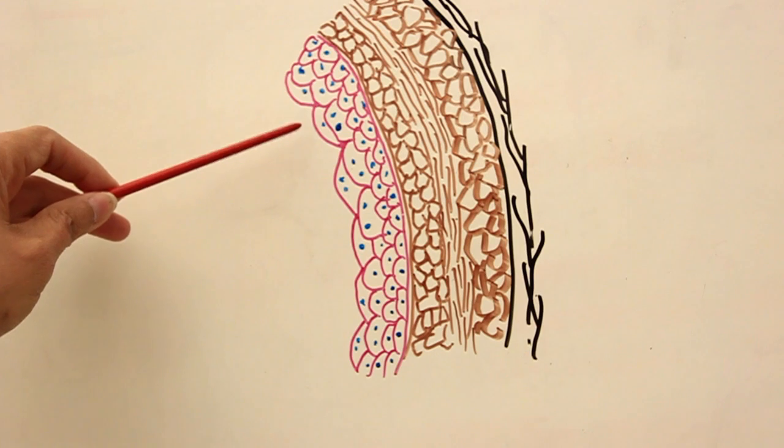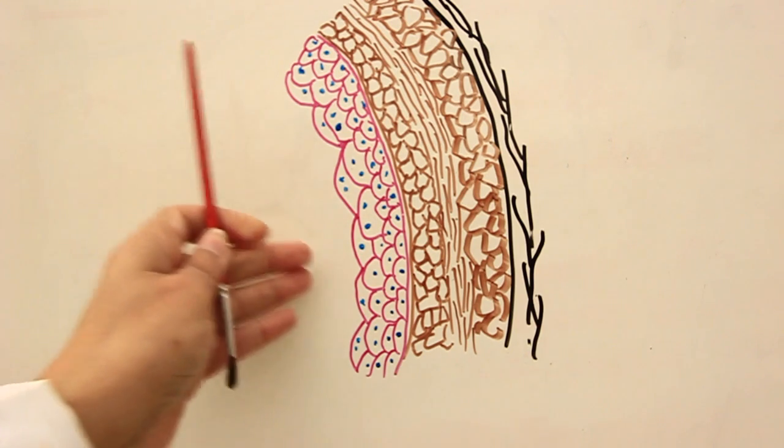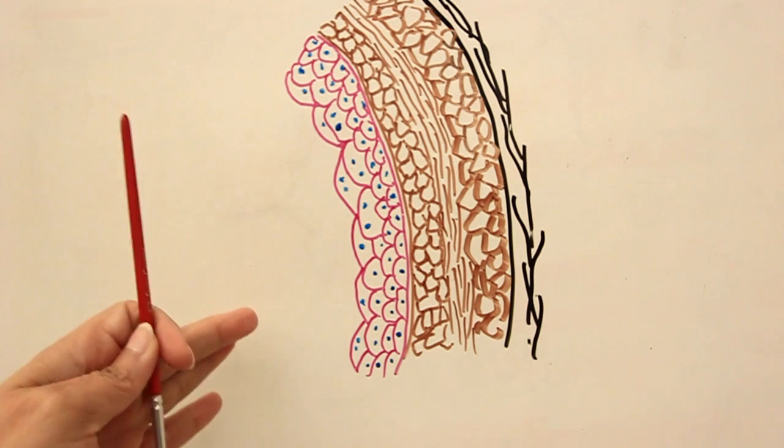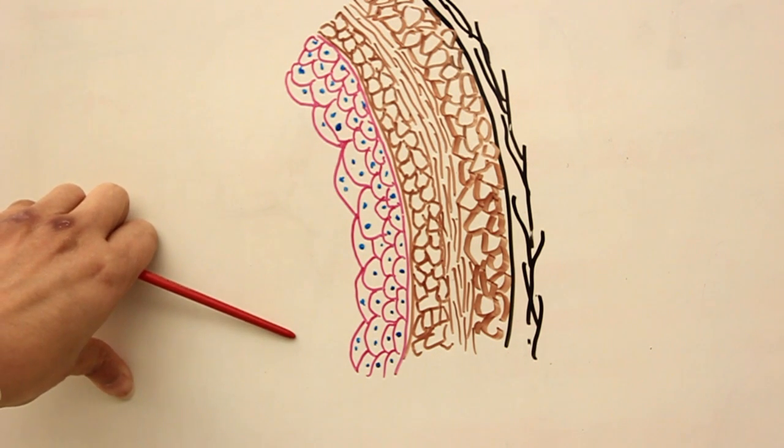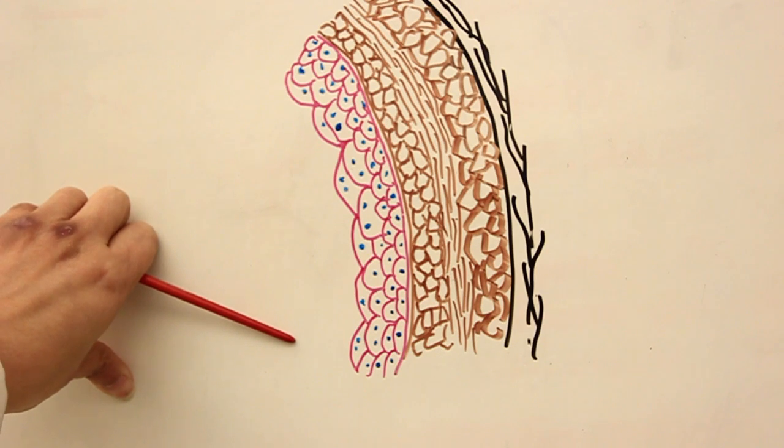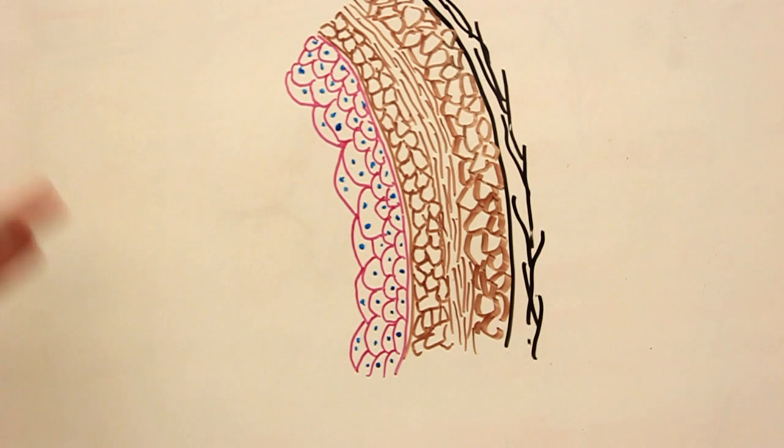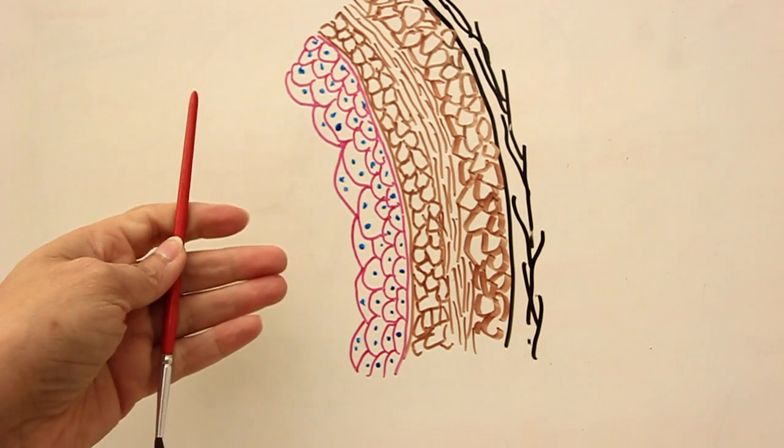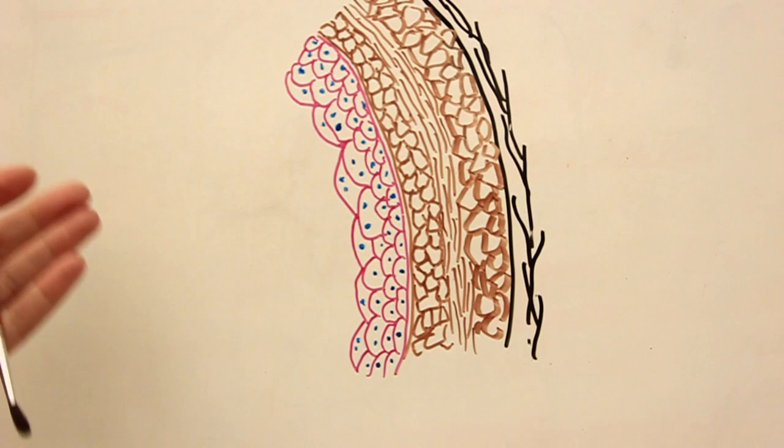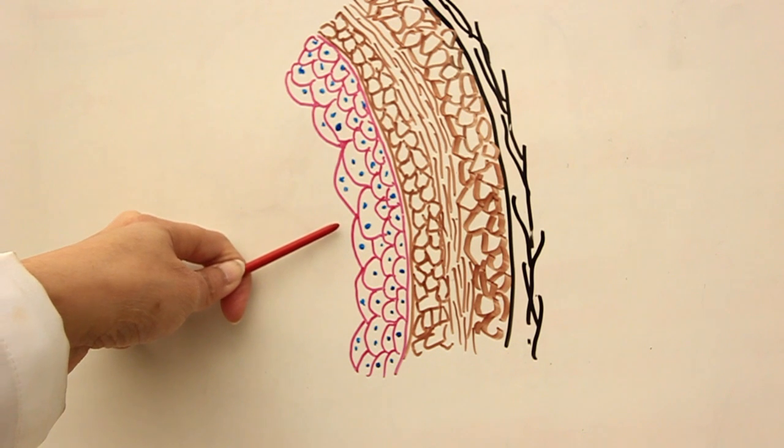It's a modified stratified epithelium with cells—you can see over here—these cells are like umbrellas, they are dome-shaped cells. The top cells which are facing the urine or facing the lumen are dome-shaped. What is the significant feature or hallmarking feature of this epithelium? First of all, it's stratified. We have many types of stratified epithelia in our body. What's so important about it?